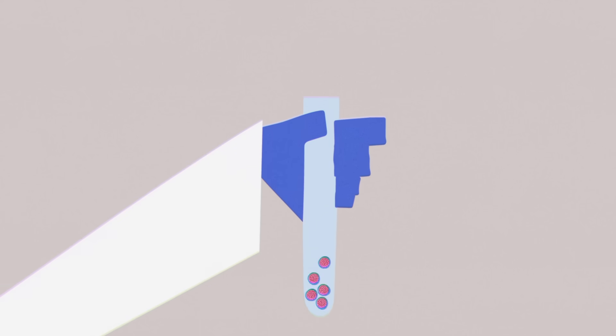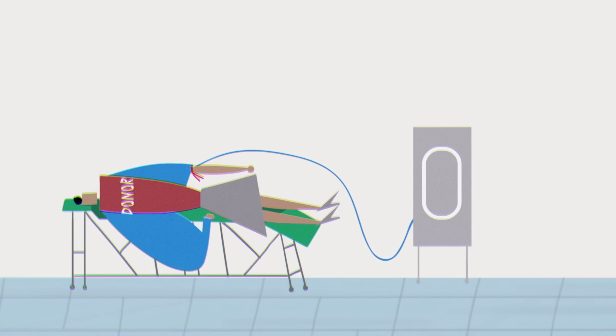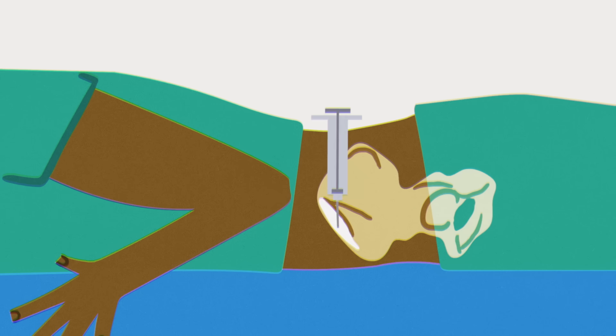First, blood stem cells are extracted from the donor. Most commonly, blood stem cells are filtered out of the donor's bloodstream by circulating the blood through a machine that separates it into different components. In other cases, the marrow is extracted directly from a bone in the hip, the iliac crest, with a needle.